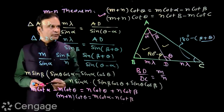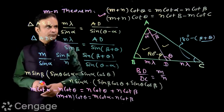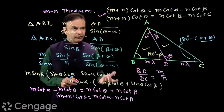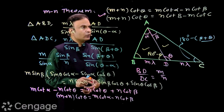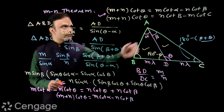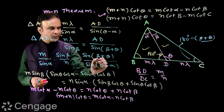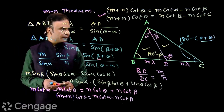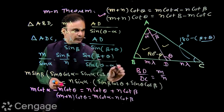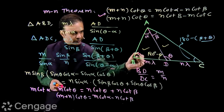This is the first formula for the MN theorem. The second formula is: (m + n) cot theta = n cot B minus m cot C. To derive this, we replace angle beta in terms of theta and angle C, and replace angle alpha in terms of theta and angle B.